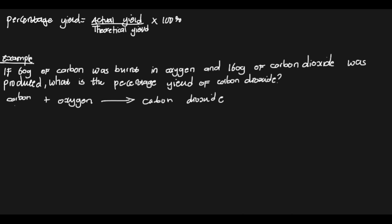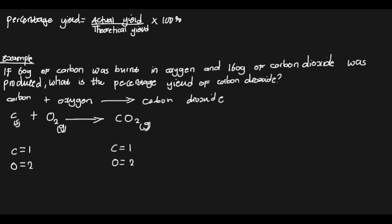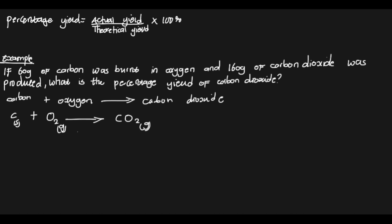Writing the chemical symbols: C plus O₂ gives CO₂. Now let's check if the equation is balanced. On the reactant side there is one atom of carbon, and also one atom of carbon on the product side. We have two atoms of oxygen on the reactant side and also two atoms of oxygen on the product side. So this combustion reaction of carbon and oxygen giving carbon dioxide is already a balanced chemical equation.